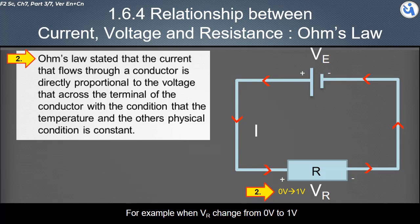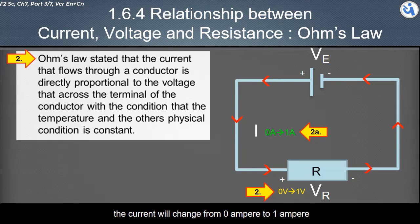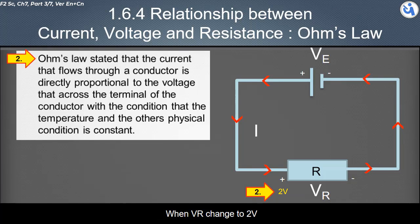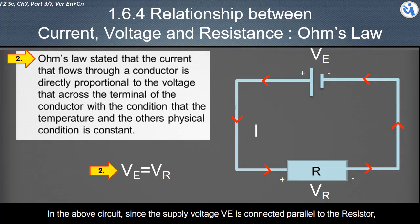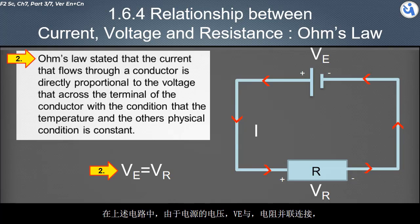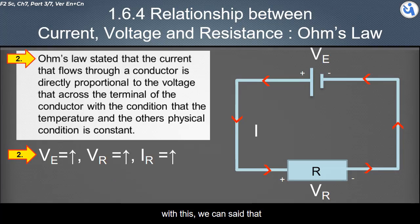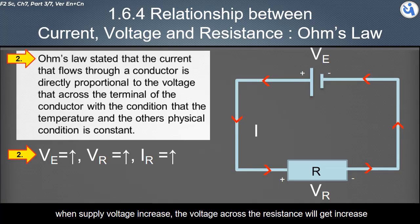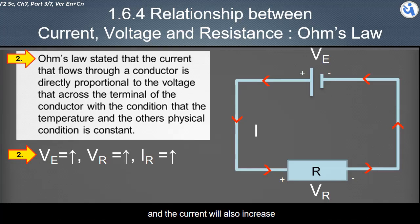For example, when VR changes from 0V to 1V, the current will change from 0A to 1A. When VR becomes 2V, current I will become 2A. With this, we can say that when supply voltage increases, the voltage across the resistance will increase, and the current will also increase.